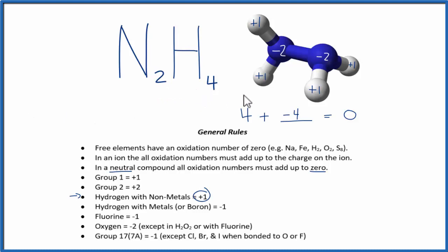So to recap, we found the oxidation numbers on the elements we knew, the hydrogens, and then we used those, and the fact that a neutral compound has all the numbers add up to zero, to figure out the oxidation numbers on each of the two nitrogens here. This is Dr. B, and thanks for watching.